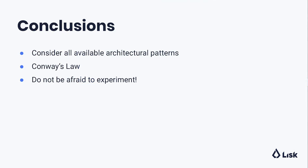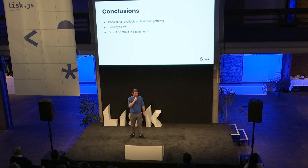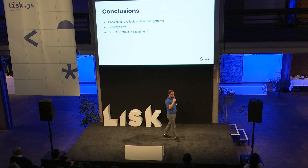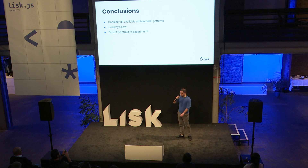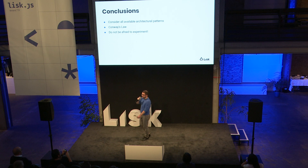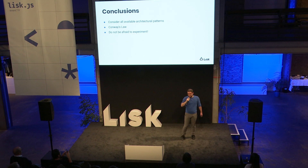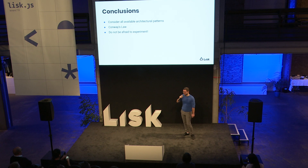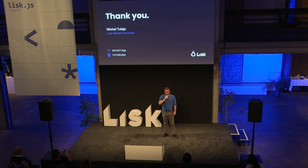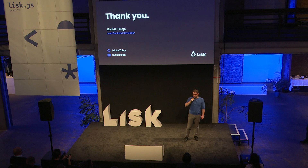Conclusions. It's actually very important to consider all available architectural patterns. I know that microservices are gaining a lot of popularity recently, but sometimes monolithic architecture also fits its purpose. Also, serverless applications are gaining a lot of popularity recently. Think about Conway's Law — think about how the particular departments in the company communicate. And don't be afraid to experiment. I've seen a lot of online resources about microservices that describe the popular streaming service, but it's a very special case. Most business applications maybe don't need microservices in that shape. Don't be afraid to experiment with software engineering. Thank you very much for your attention, and if you've got any questions regarding microservices, I'll be hanging around. Thank you.